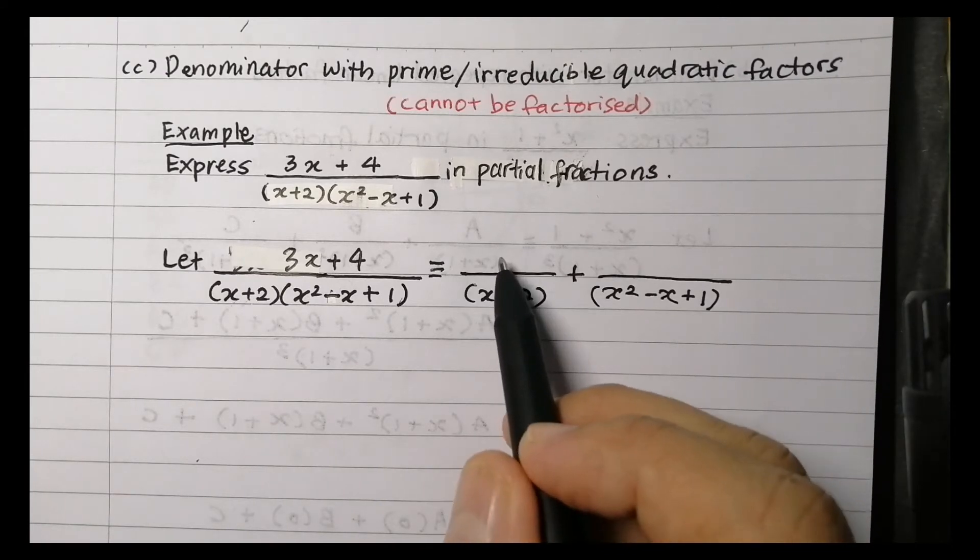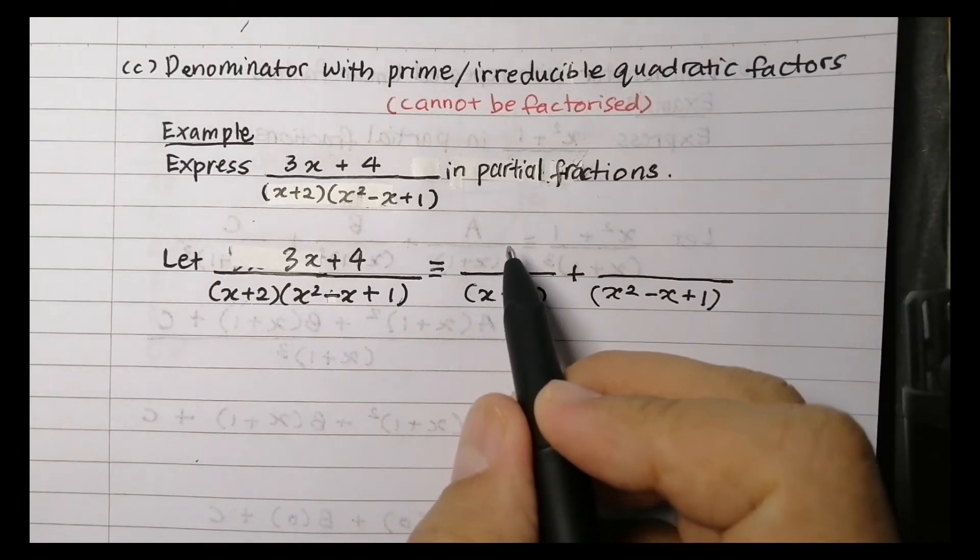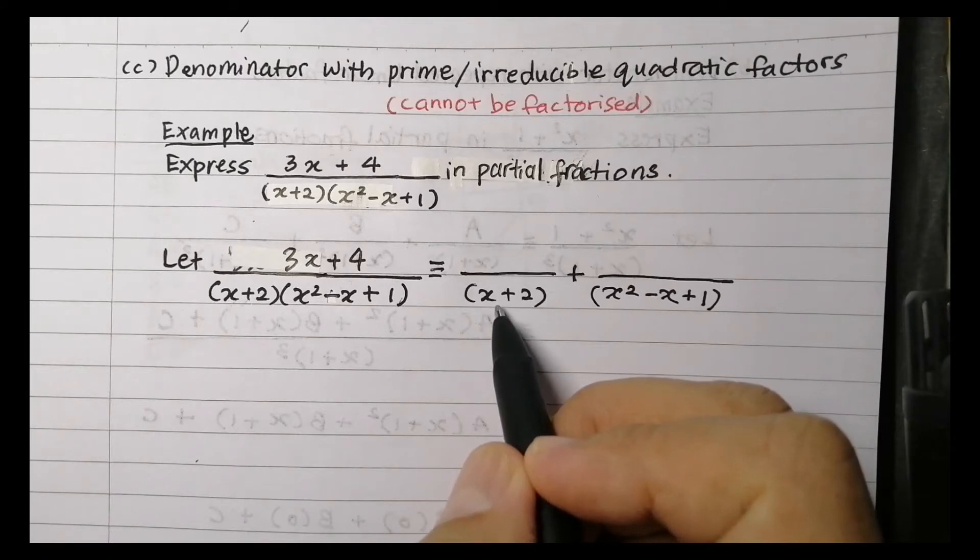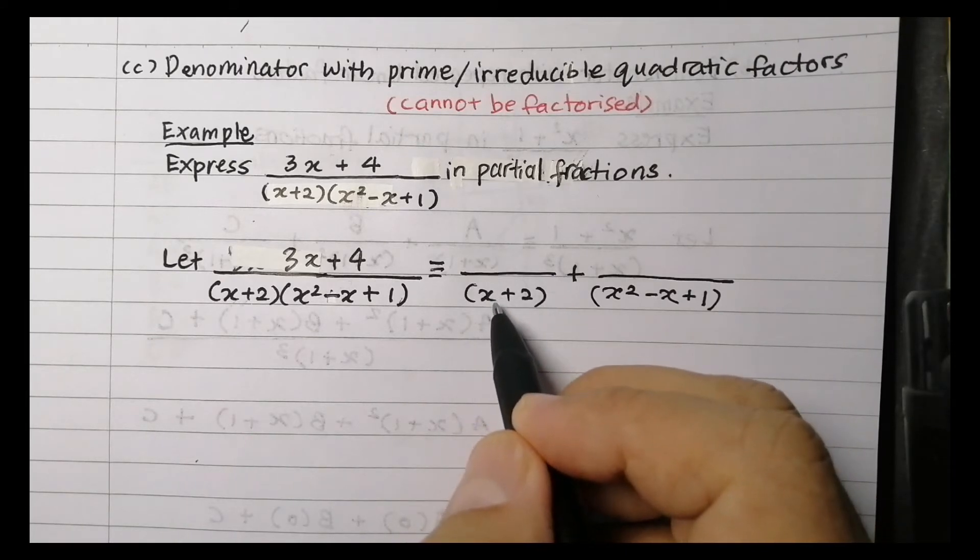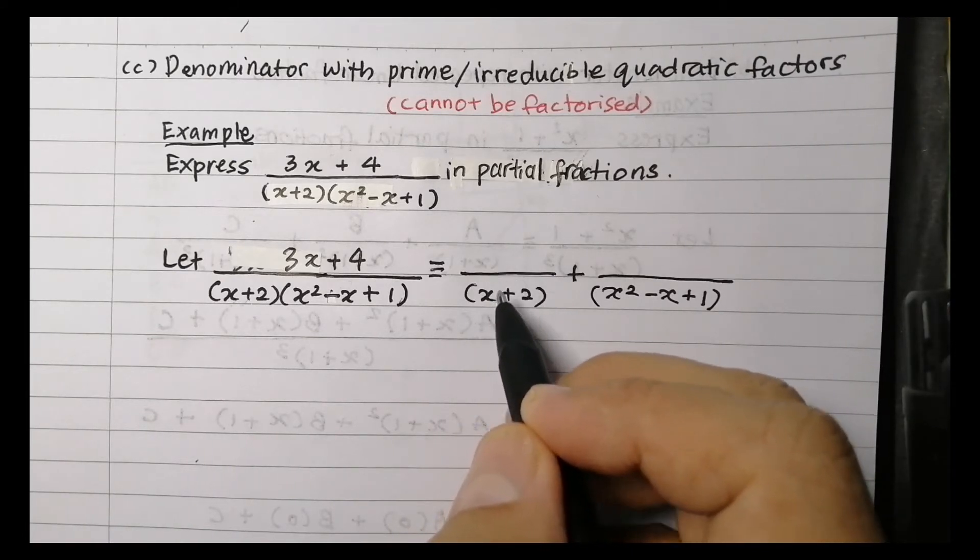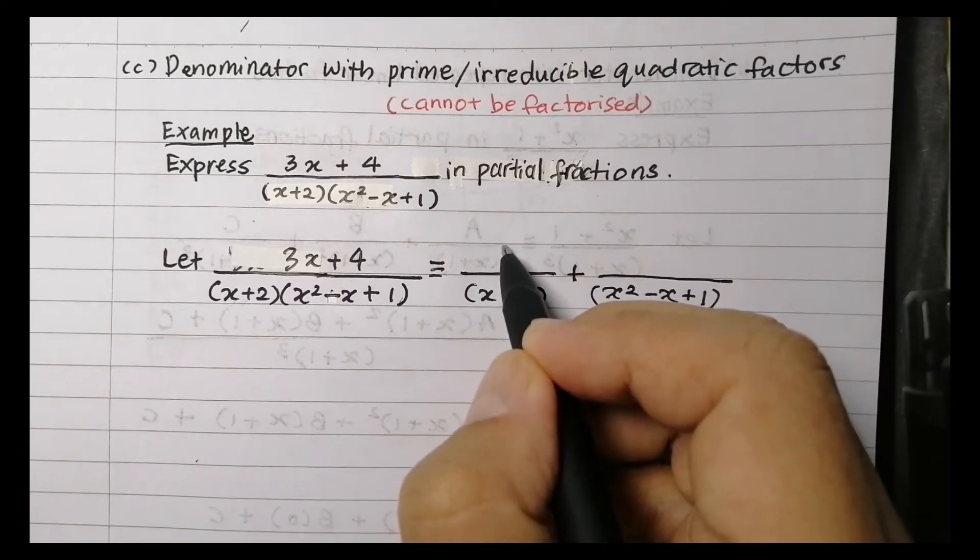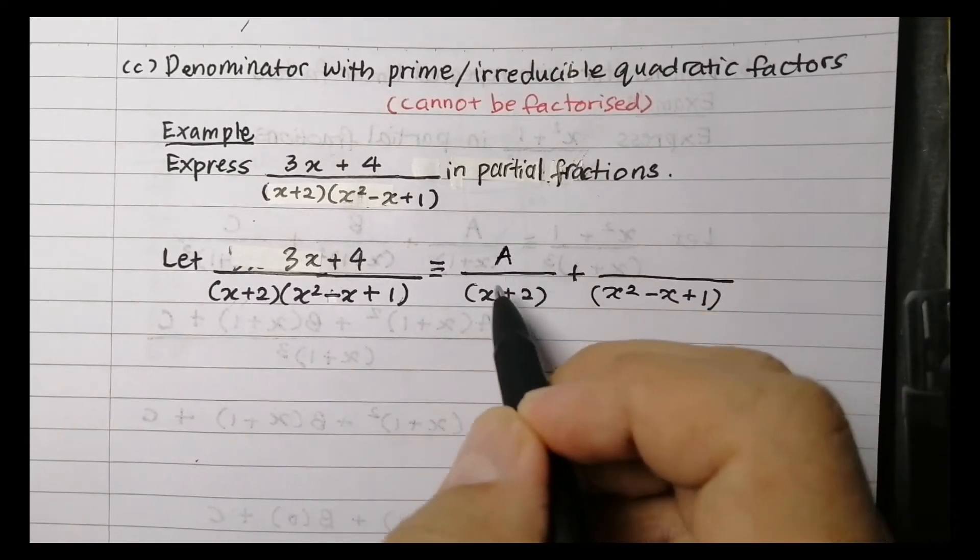One is X plus 2, and another one is X squared minus X plus 1. Then put the numerator for each function.